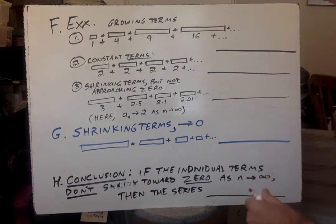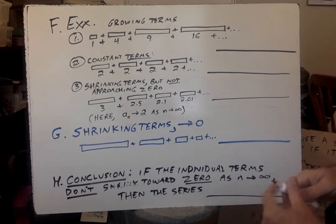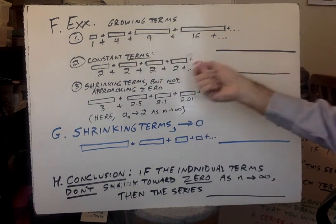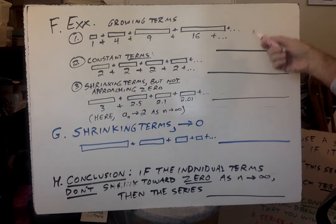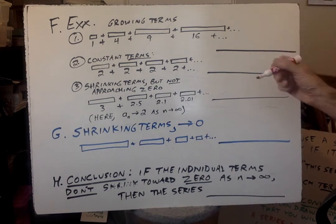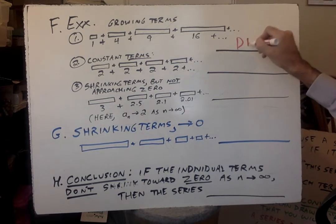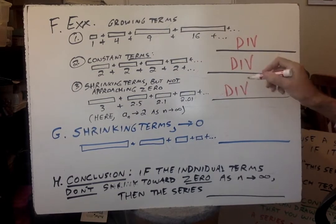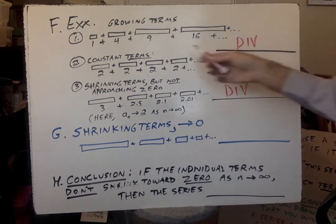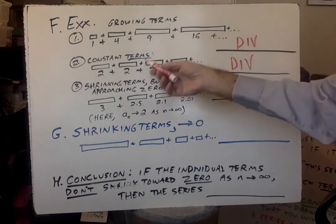Here are some examples. This is very similar to the lab, so I'll go very quickly. Series with growing terms, series with constant terms, series with shrinking terms. They get smaller but do not approach zero. So write whether each one converges or diverges. And of course, for every single one of these, these all diverge. There's no way I can draw a finish line that you can't cross with any of these.